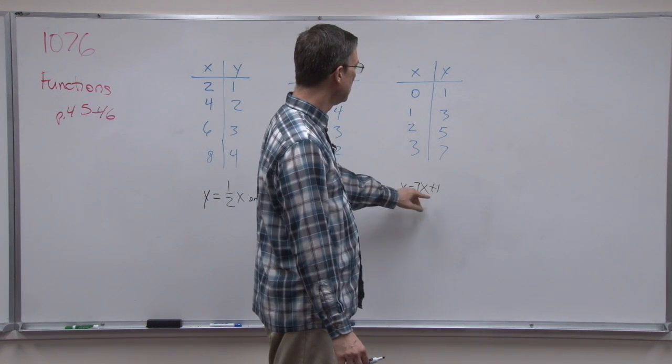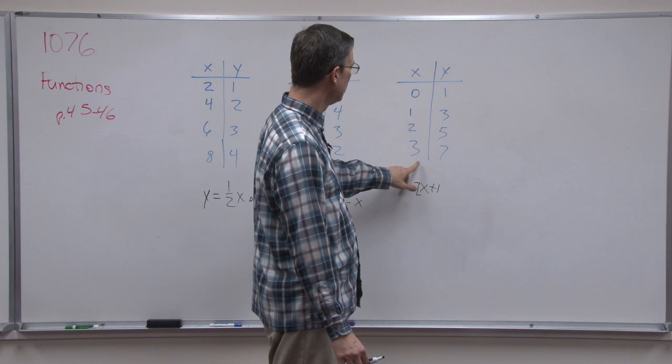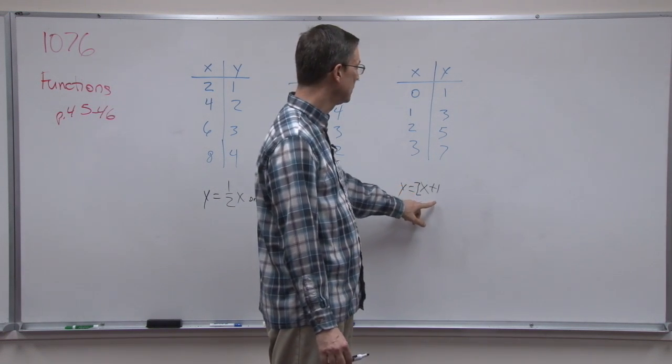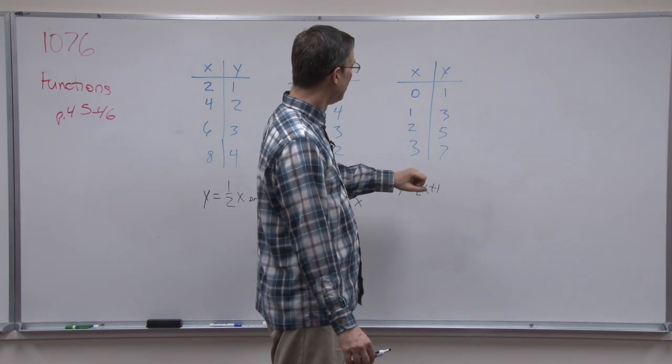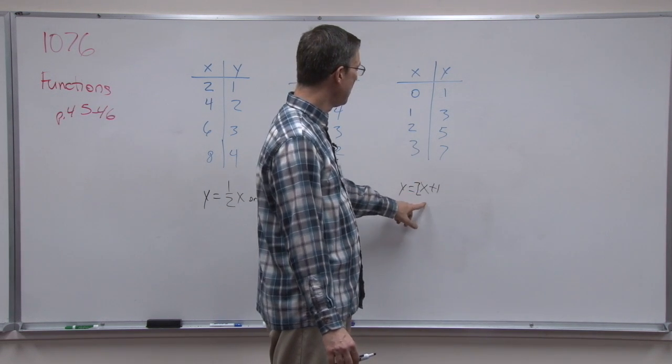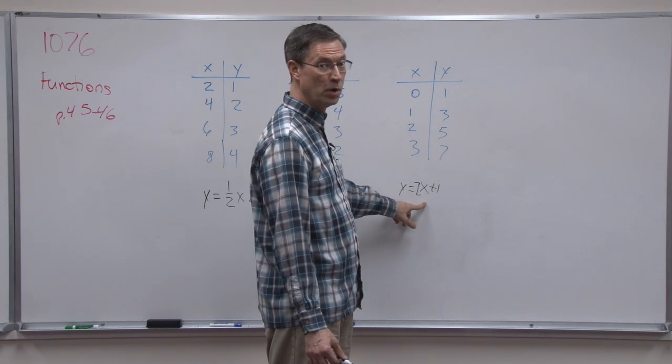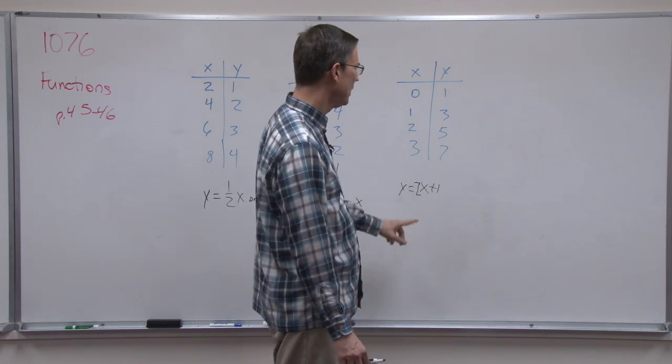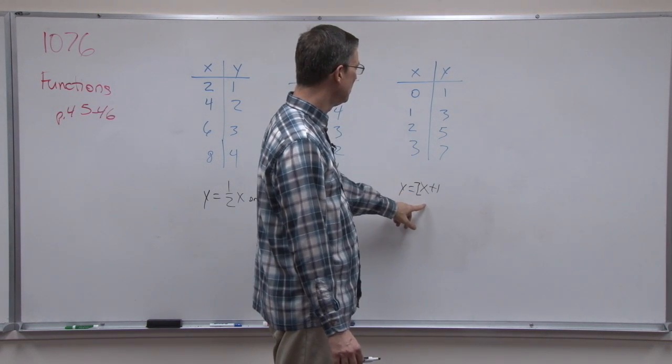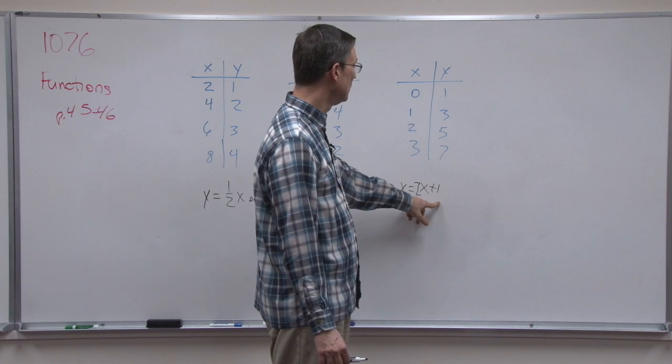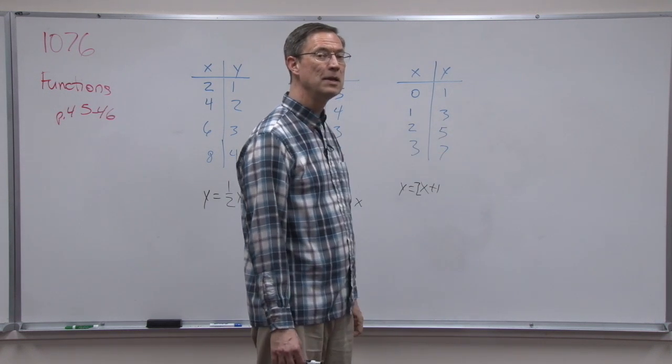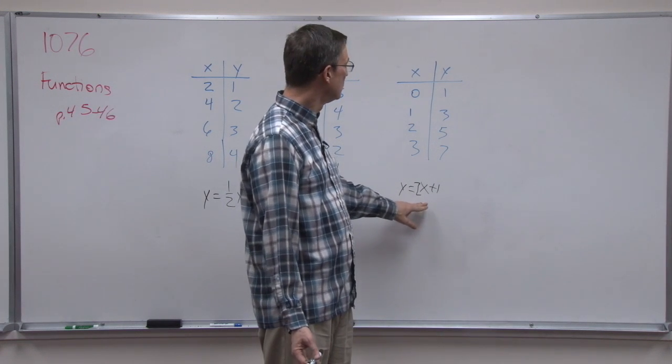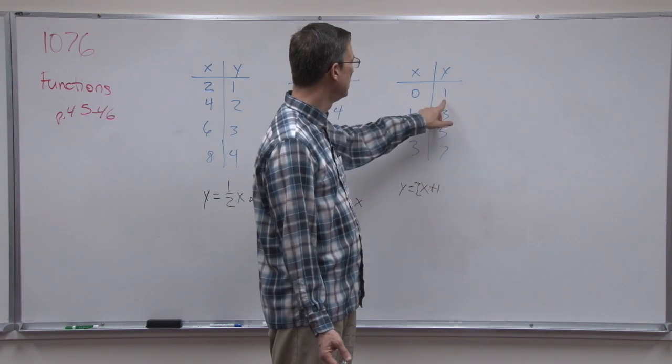So in my mind, I'm plugging in. I'm going to start here at the bottom this time. Plug in 3. What's 2 times 3? 6. And then 6 plus 1, 7. Yay! Let's plug in 2. 2 times 2 is 4. 4 plus 1. It works. I bet it's going to work with the 1. Let's try it. Plug in 1. 2 times 1 is 2 plus 1 is 3. And it even worked with 0 because 2 times 0 is 0. So 2 times 0 is 0 plus 1. I get 1.